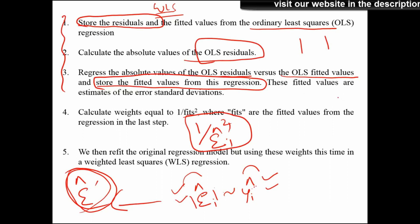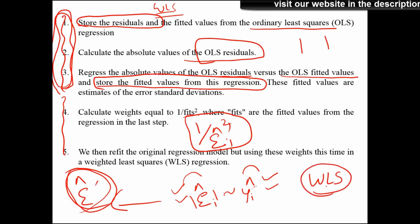Step 5: Once we have the weights, use the WLS formula from the earlier slides to find the beta estimates. You don't have to do all these steps manually — software will automate it. Nowadays you can use a WLS procedure or function in R or SAS and it will perform all the steps. The reason for explaining all five steps is for your theoretical understanding of how WLS differs from OLS.